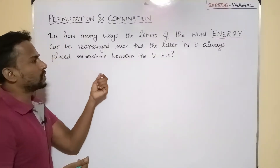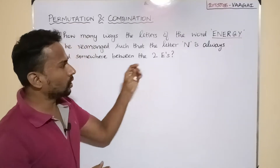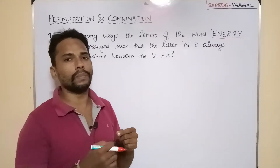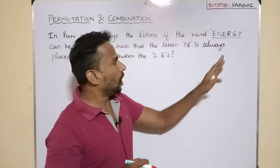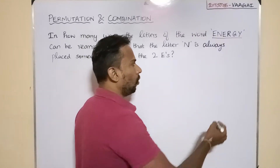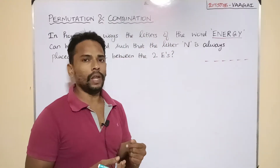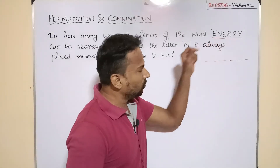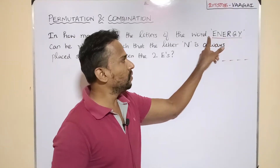We need to understand this condition very carefully. The letter N is always placed somewhere between the two E's. Let me give you some examples to get clarity. Our given word is ENERGY — we have totally six letters. Now, in the word ENERGY itself, the condition is satisfied: one E is here, the other E is here, and in between those two E's we have this N.